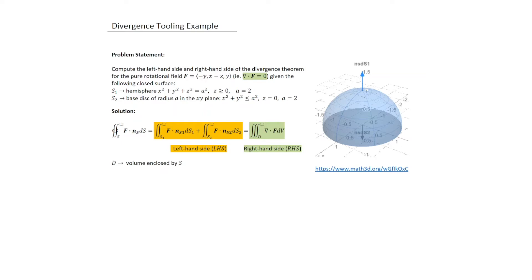For a rotational field, we know the divergence must equal zero. The surface consists of two surfaces stitched together: S1, a hemisphere given by x² + y² + z² = a², with z ≥ 0 and a = 2; and S2, the base disk of radius a in the xy-plane, given by x² + y² ≤ a², z = 0, with a = 2 again.